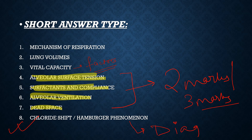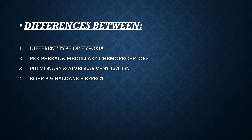In the chloride shift, please include the diagram — it is given in your textbook. Chloride shift, to avoid confusion, it can also be asked as Hamburger's phenomenon. So I have already said that chloride shift is also known as Hamburger's phenomenon. In this, we also have the differences between different types of hypoxia, peripheral and central chemoreceptors given in your textbook, pulmonary alveolar ventilation given in your textbook.